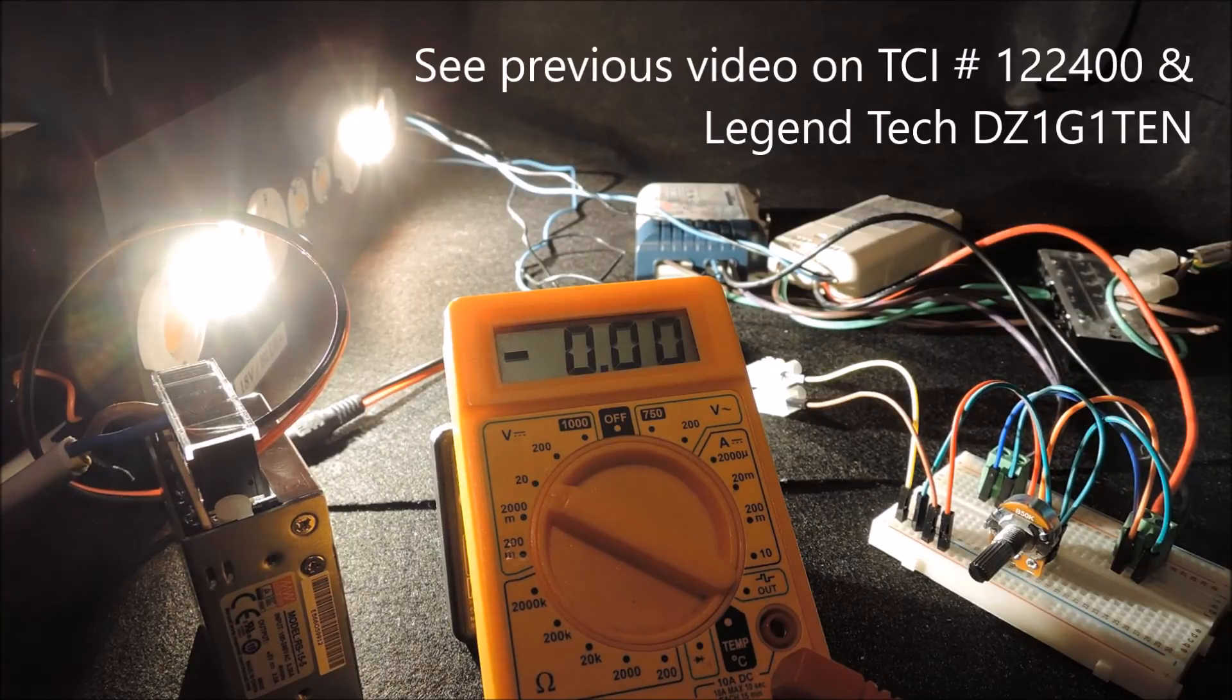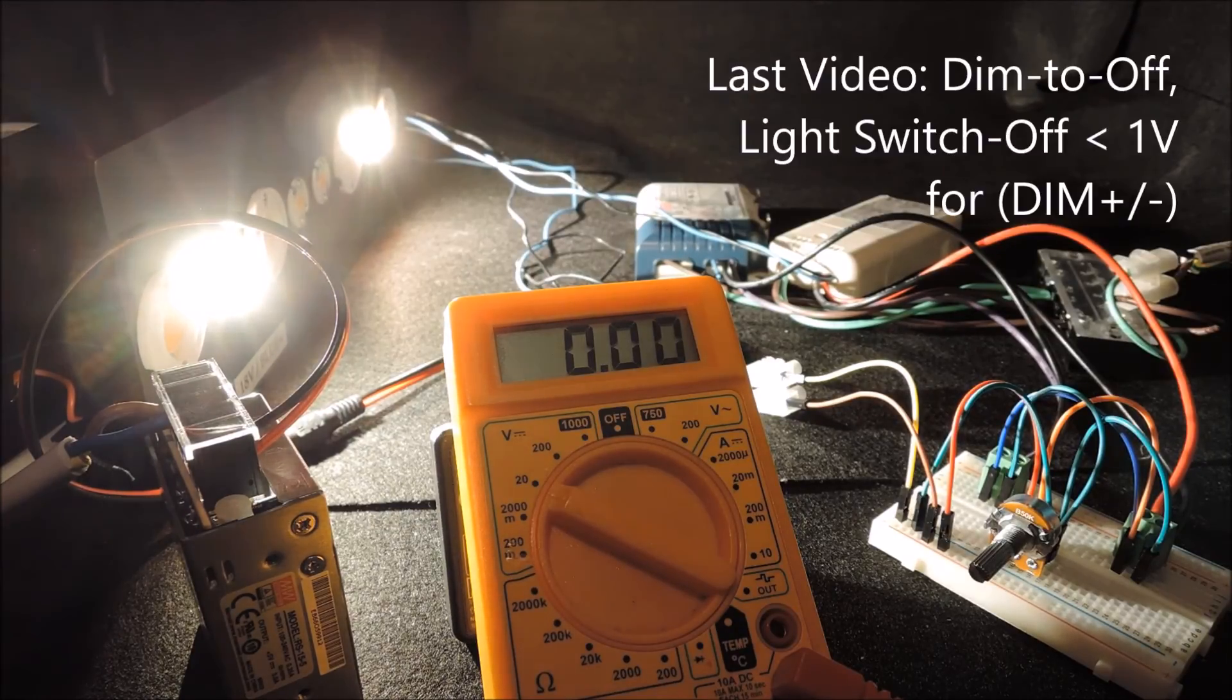In this video, we used the TCI DC Mini Jolie 122400 with the Legentech DZ1G1TEN controller to show that the driver would switch off the light when we hit below 1 volt across the dim plus or minus input for the driver.